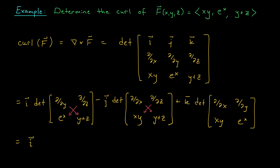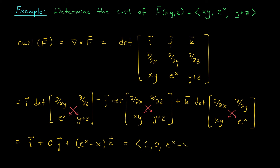In the second matrix, we have partial by partial x applied to y+z — that's 0 — minus partial by partial z applied to xy — that's also 0. So the j-hat term goes away. Finally, partial by partial x applied to e^x gives e^x, minus partial by partial y applied to xy gives x. So we have (e^x − x) times k-hat. The curl of f is given by the vector (1, 0, e^x − x).